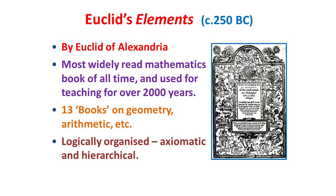This angle sum result appears in the Elements, an important work from the 3rd century BC by Euclid of Alexandria, which was then part of the ancient Greek world but is now in Egypt. Euclid's Elements is the most widely read mathematics book of all time, being used for teaching for over 2,000 years, right up to the 20th century. It consists of 13 books, originally written on rolls of papyrus, which contain results from geometry, arithmetic and other areas.